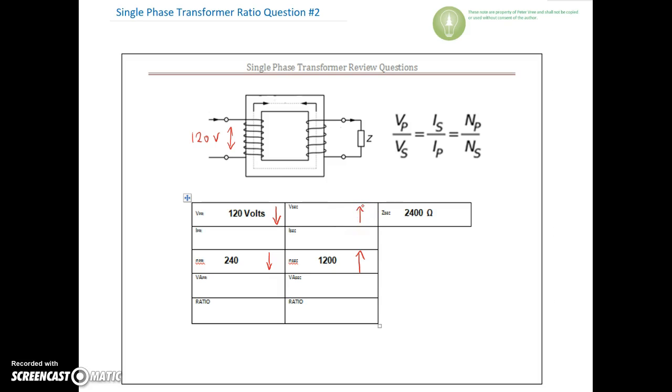Okay, so what's the ratio there, guys? Well, let's take a look. We got 240 and then we got 1,200. So if we take the 1,200 and divide it by 240. So again, if we take that 1,200 on the secondary, divide it by 240 on the primary, then we'll find that there are five times as many turns on the secondary.